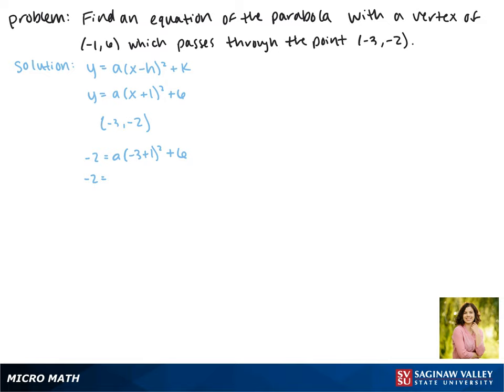Negative 3 plus 1 is negative 2. Negative 2 squared is 4. Now we subtract 6 from each side and we get 4a equals negative 8.